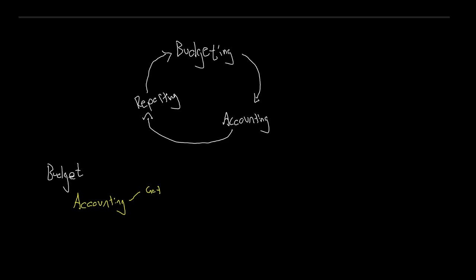Accounting is: to gather — that's your data collection; classify — figuring out where money was spent and categorizing it under the appropriate subheadings; and record — putting it all in its right spots and working out the summations. All together, this allows us to report the information to the relevant decision makers. Not to overly simplify the role of accountants — they are definitely extremely important in this whole process — but it's beyond the scope of what we're looking at.